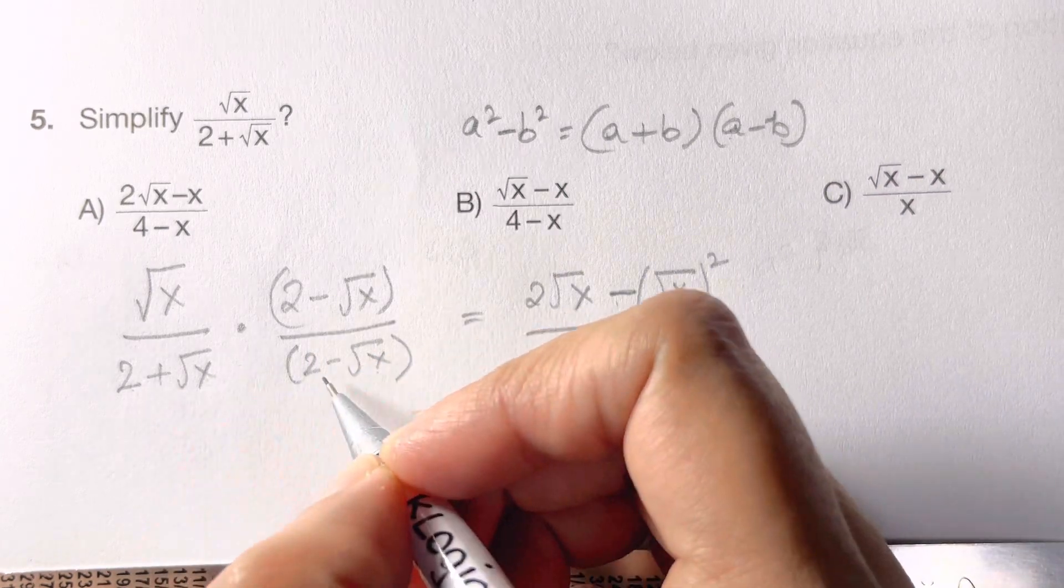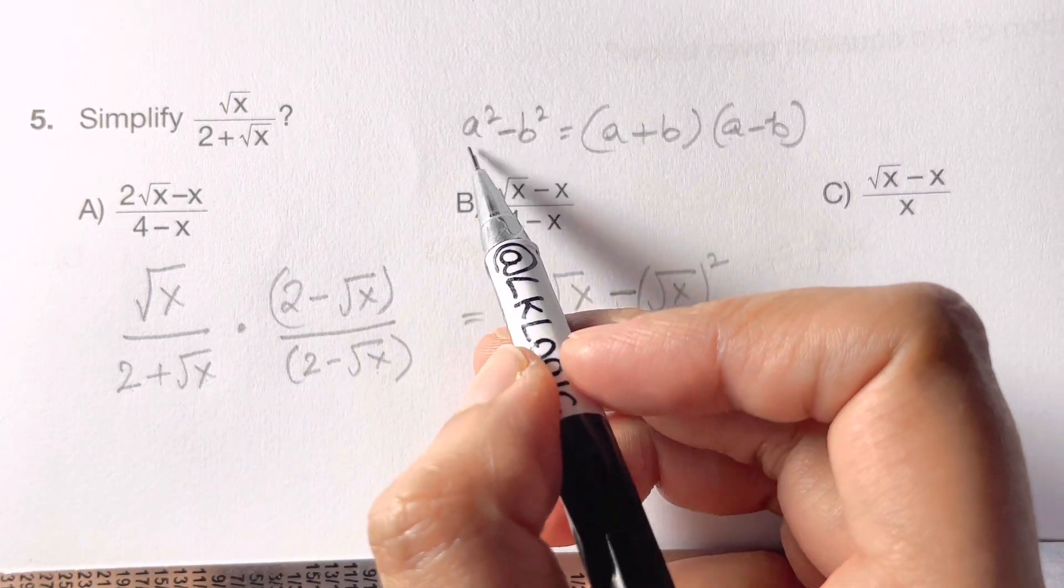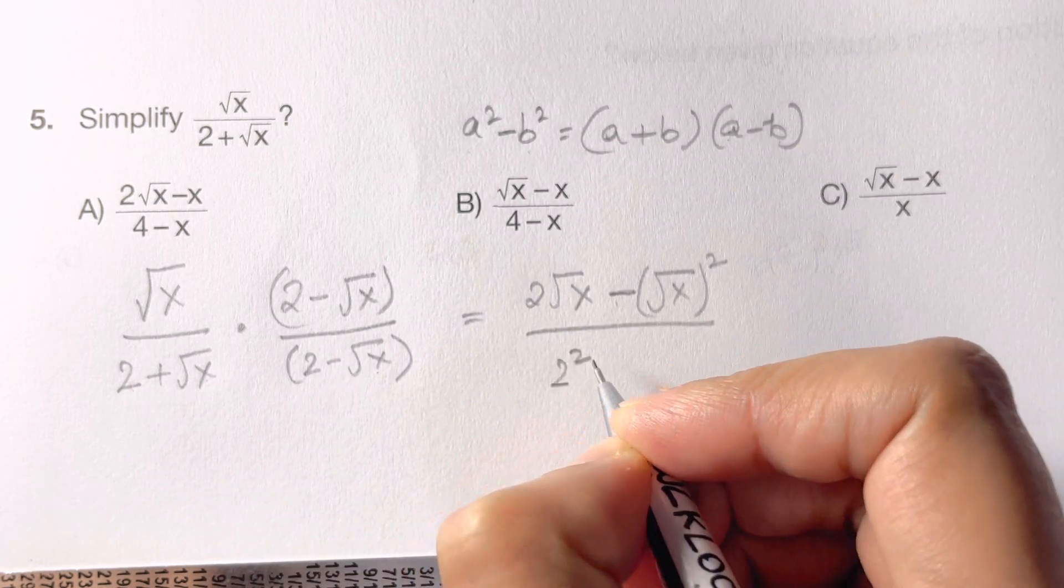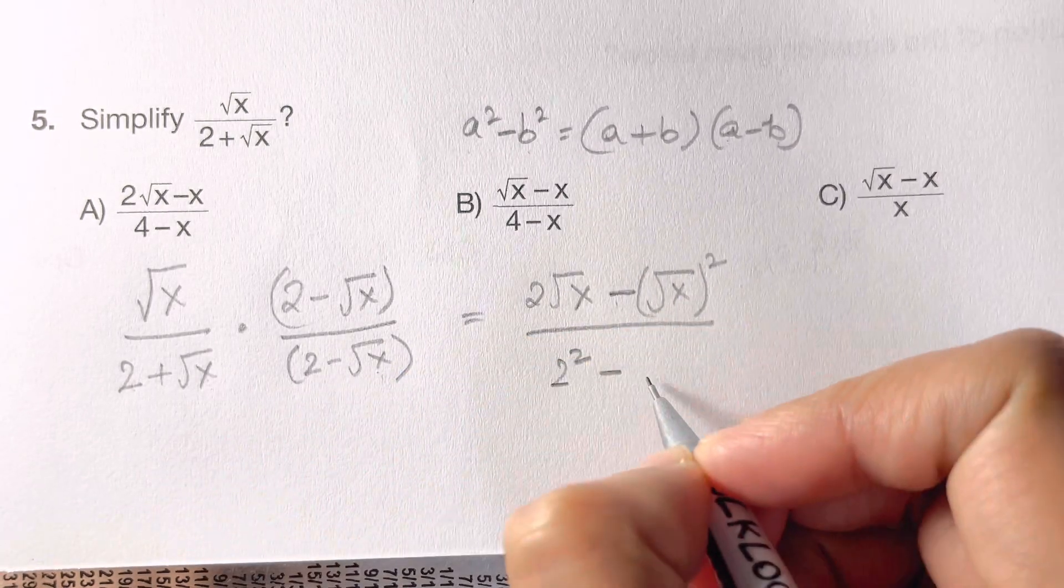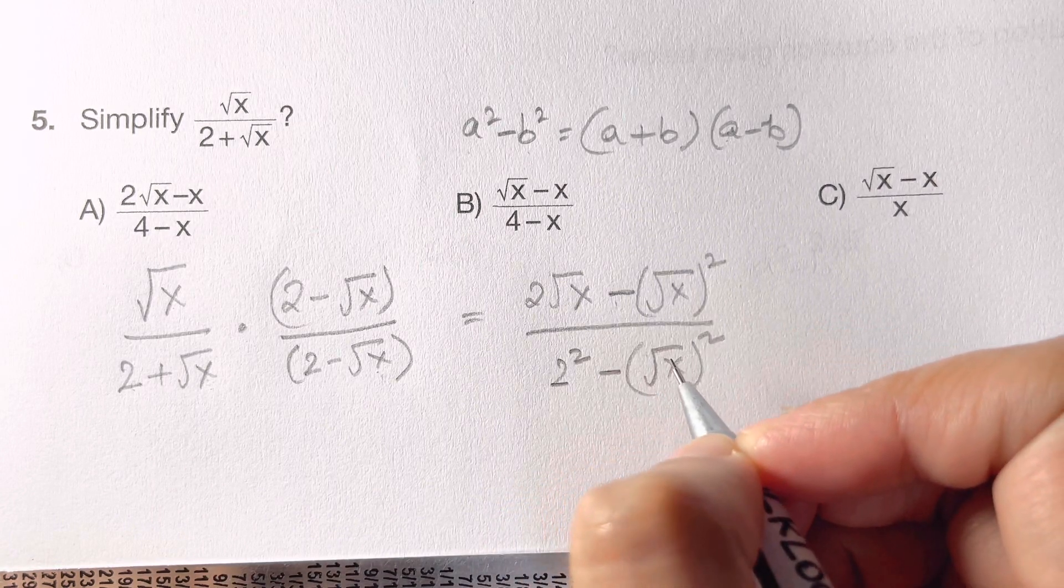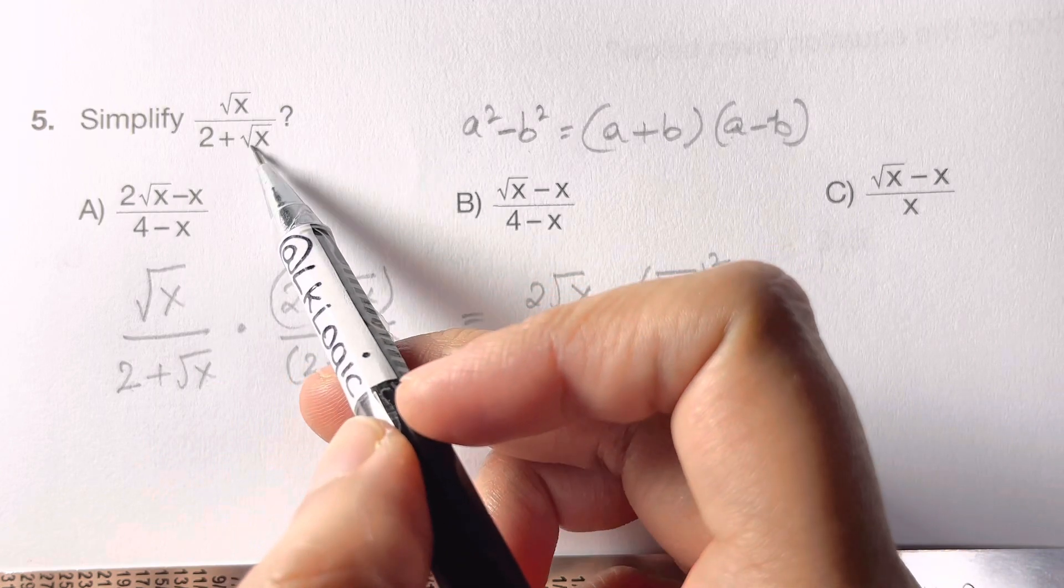Now you have a plus b times a minus b, that's equal to a square minus b square. A is 2, so 2 square minus root x the whole squared. Why we use this identity? To remove the square root from denominator.